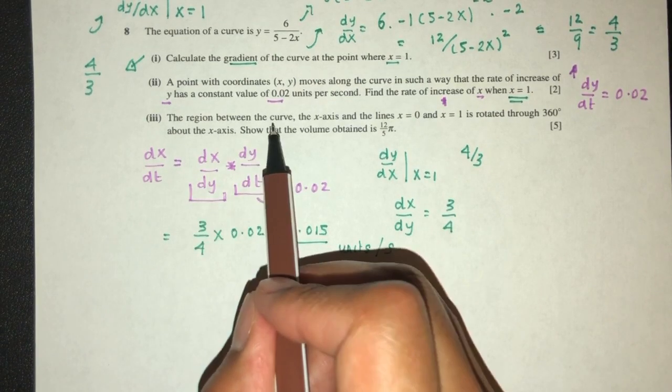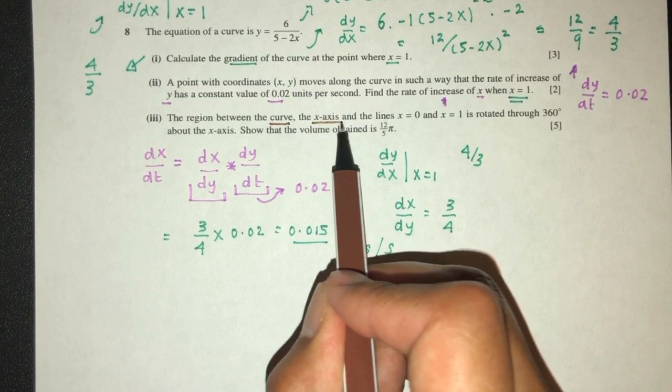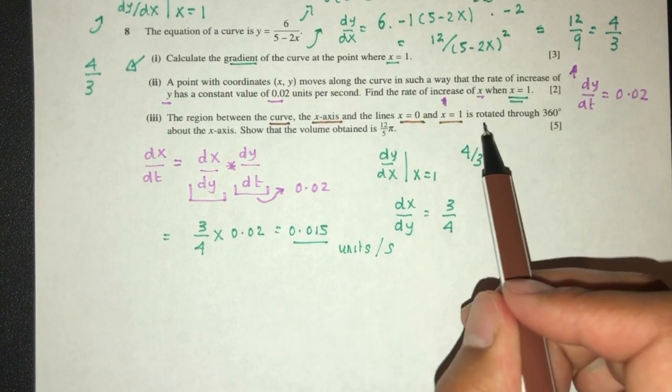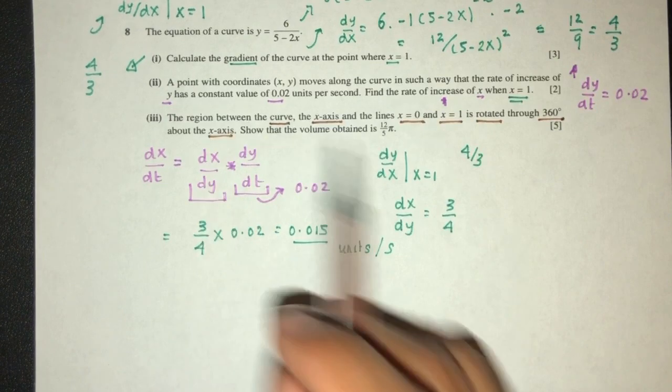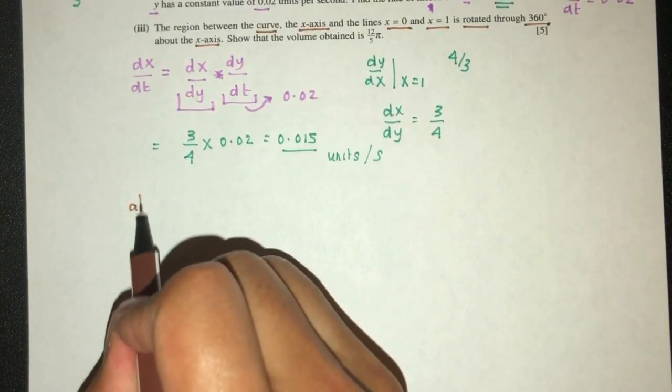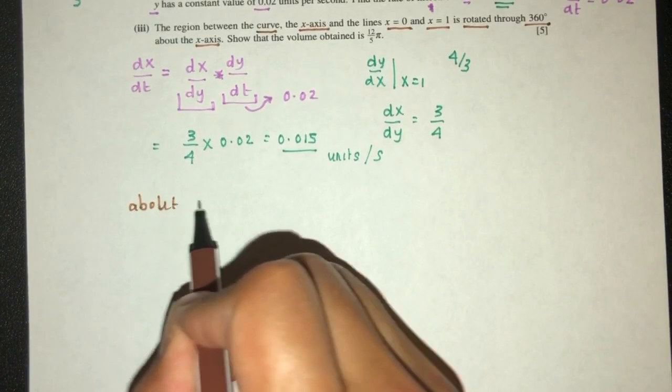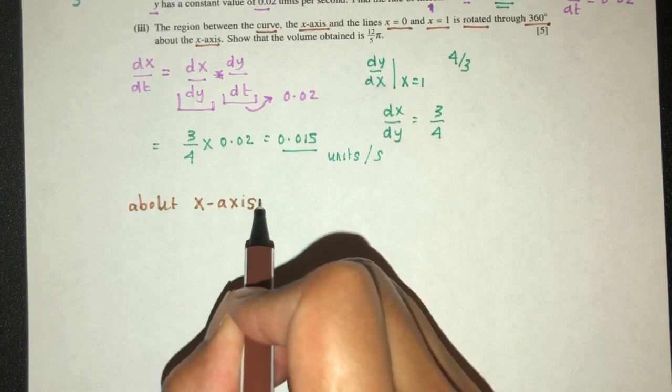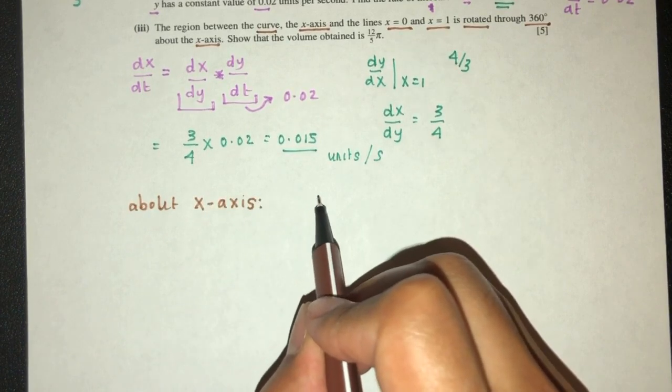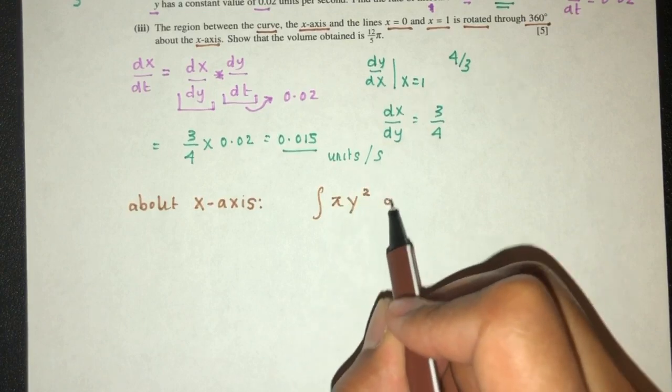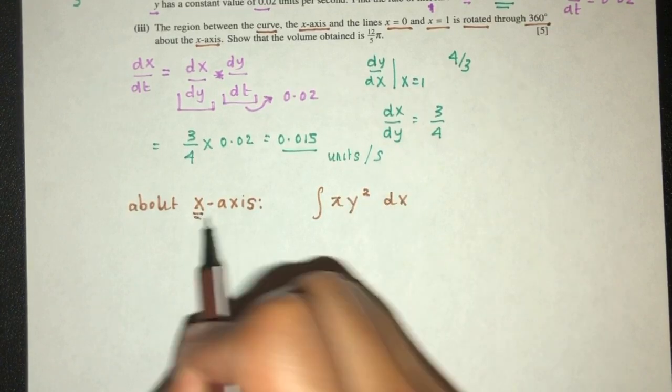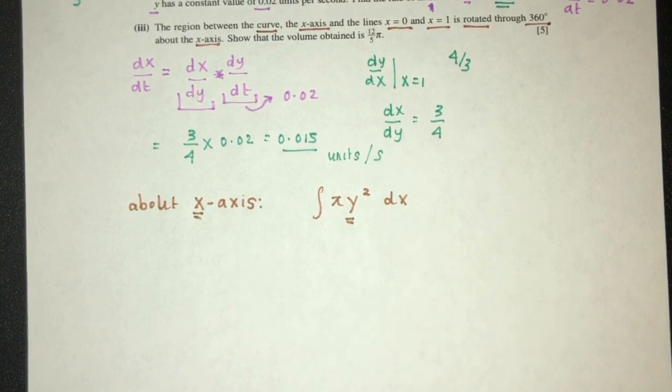is rotated through 360° about the x-axis. Now again, about x-axis rotation, we are using this formula right here, which is integration of πy² with respect to dx. Now we have x, this will become y. Now y was found to be 6/(5-2x).